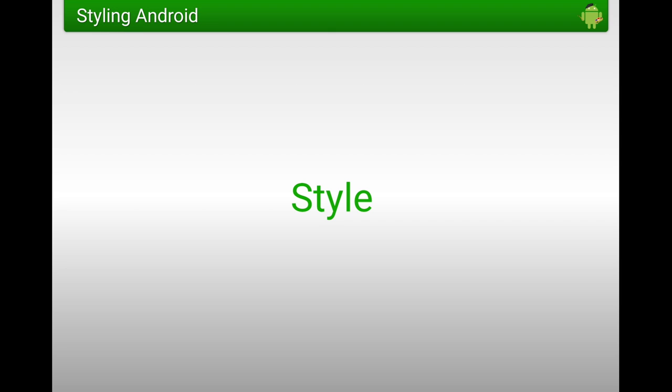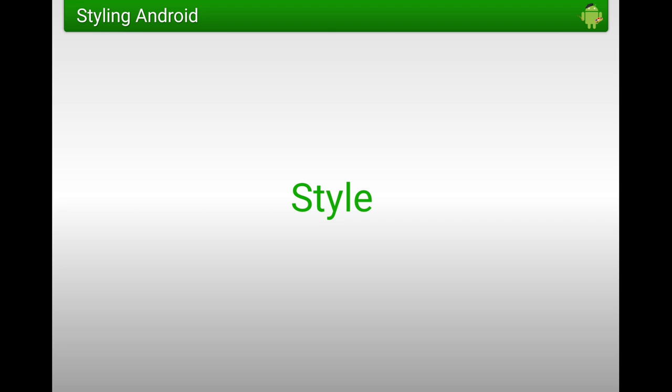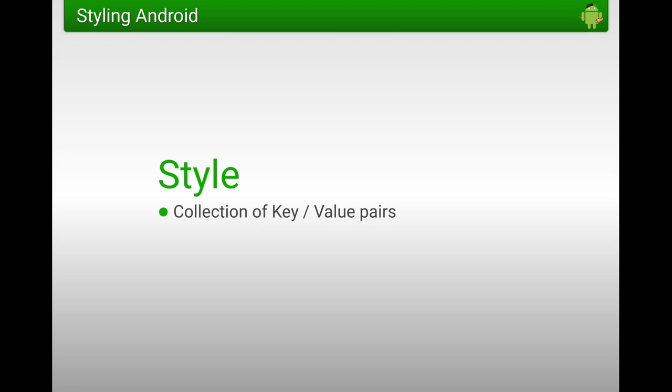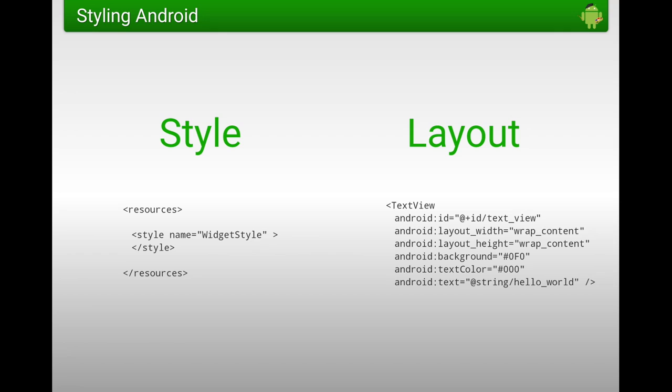At the core is this thing called a style. So what is a style? It's a collection of key-value pairs. That's it. The key represents a view attribute — where you have a layout, you have a number of attributes on each view. The name of those attributes is the key in your style. The value is what you want to apply. So if we look at a layout, this is a fairly standard text view with a number of attributes.